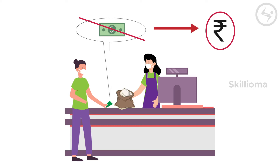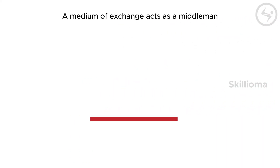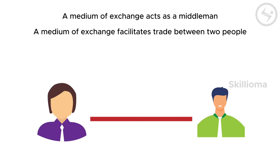However, there are ways to convert this dollar into rupees and then use it — that is foreign exchange, which we will touch on later in this lesson. This helps us understand three things: number one, a medium of exchange acts as a middleman; number two, a medium of exchange facilitates trade between two people; number three, currency is different for different countries.